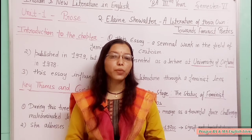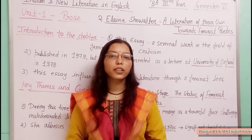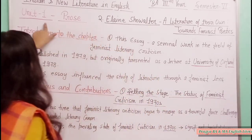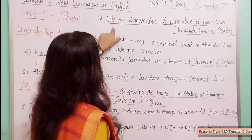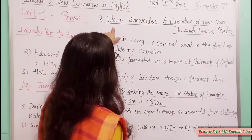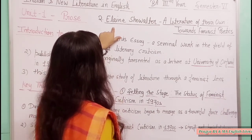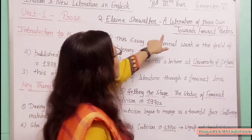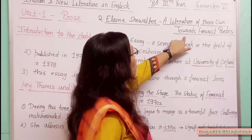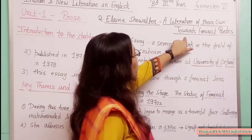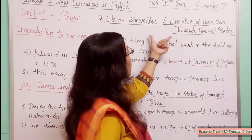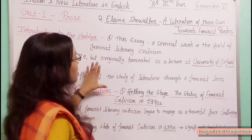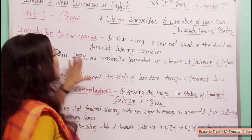In the last video we introduced Elaine Showalter's 'A Literature of Their Own: Towards Feminist Poetics.' You can see here on the whiteboard — in Unit 1, Prose, the second topic given in your syllabus is Elaine Showalter's 'A Literature of Their Own: Towards Feminist Poetics.' We will introduce and understand this essay.